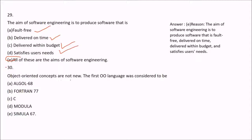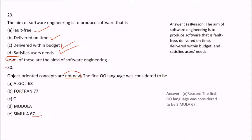Question 30: Object-oriented concepts are not new. The first object-oriented language was considered to be Simula 67.